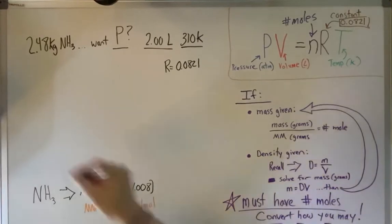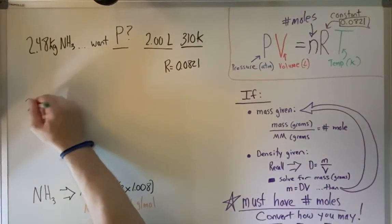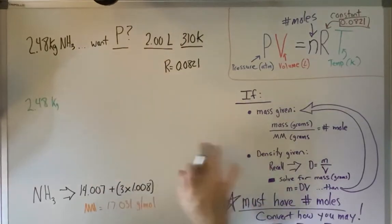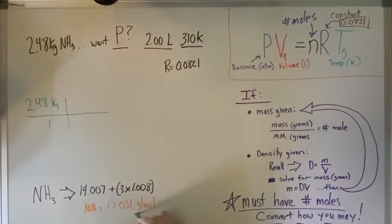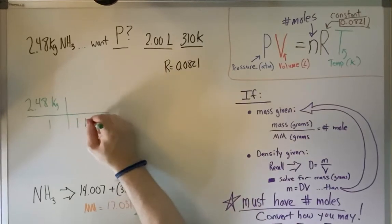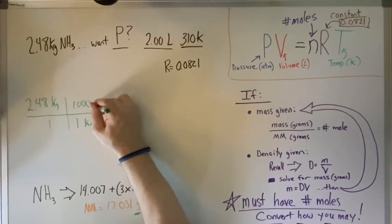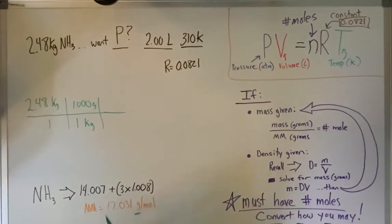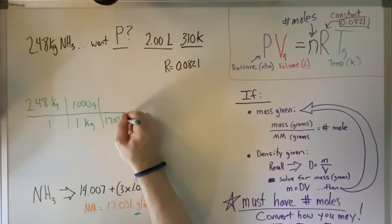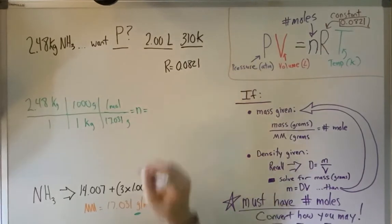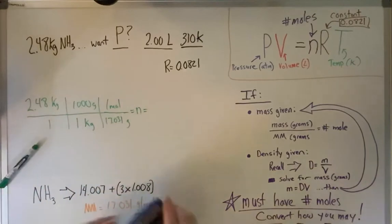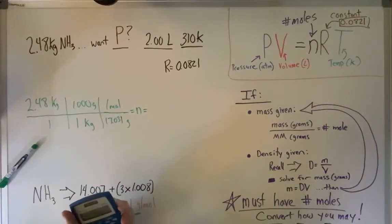So, converting this to moles. So we start off with what we have, 2.48 kilograms. And this is all ammonia, so I'm not going to write ammonia every time. Now you have to, in order to use molar mass down here, you've got to have it in grams. So 1 kilogram is 1,000 grams. Now we're on grams. So now I can use this number down here. So 17.031 grams is 1 mole. And now I can find N, which is going to equal. I do 2.48 times 1,000. And I divide that by 17.031.